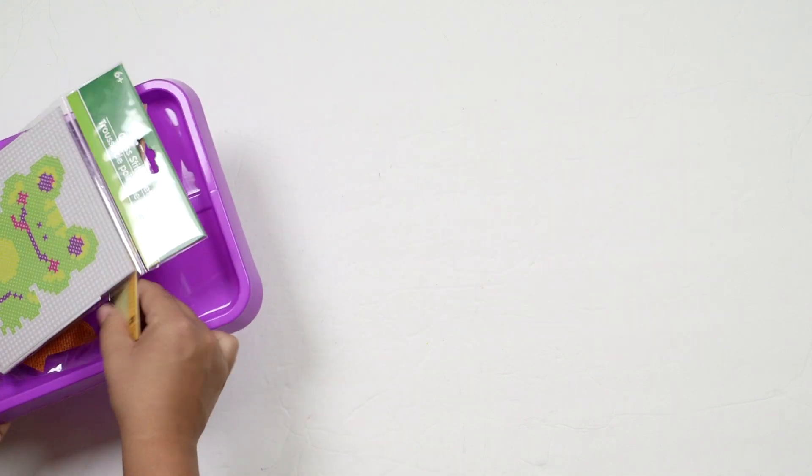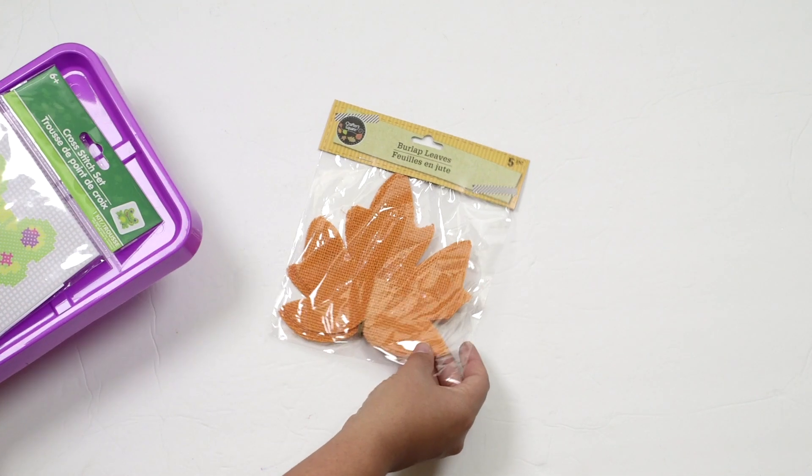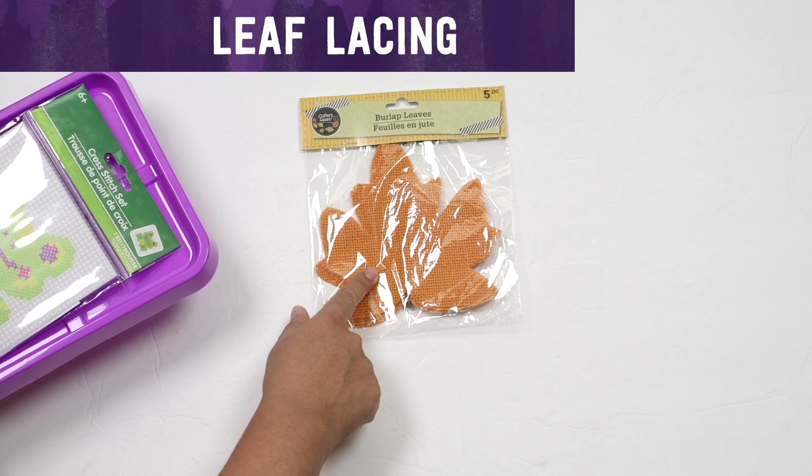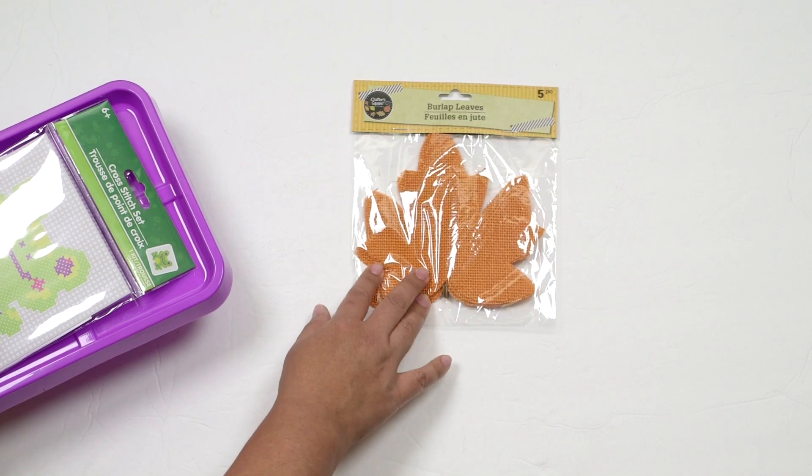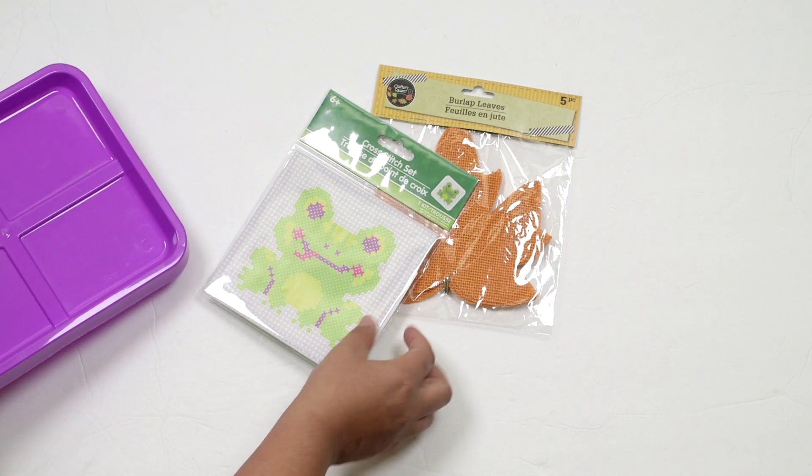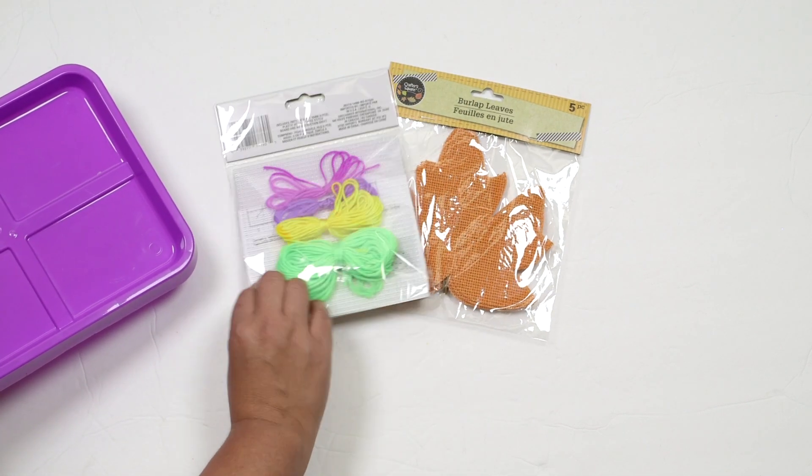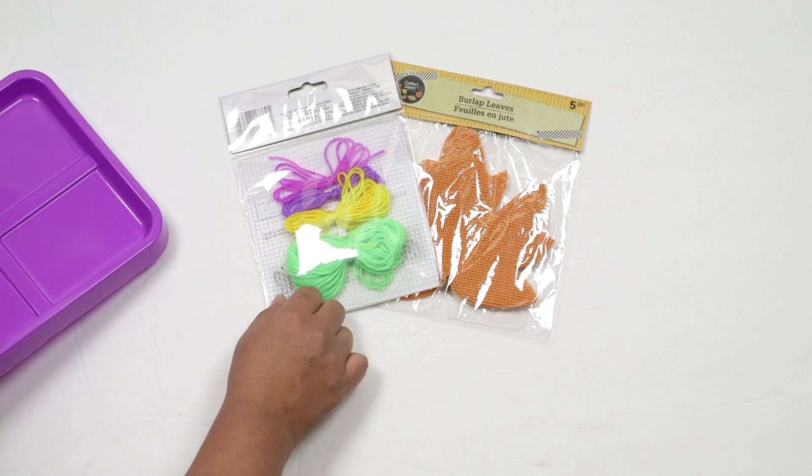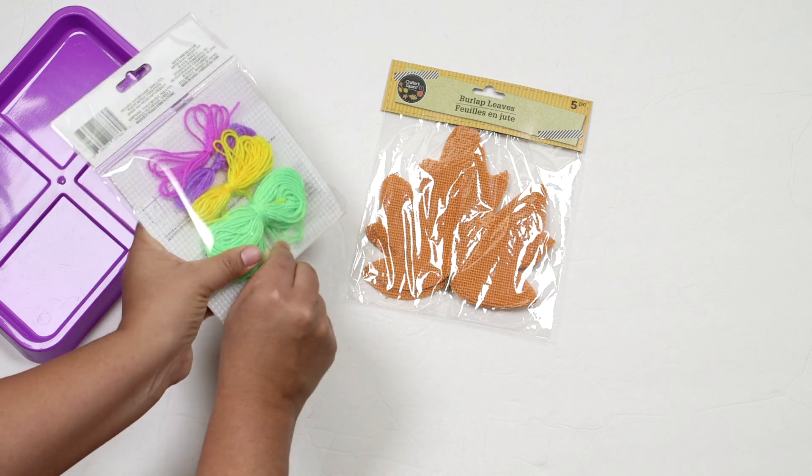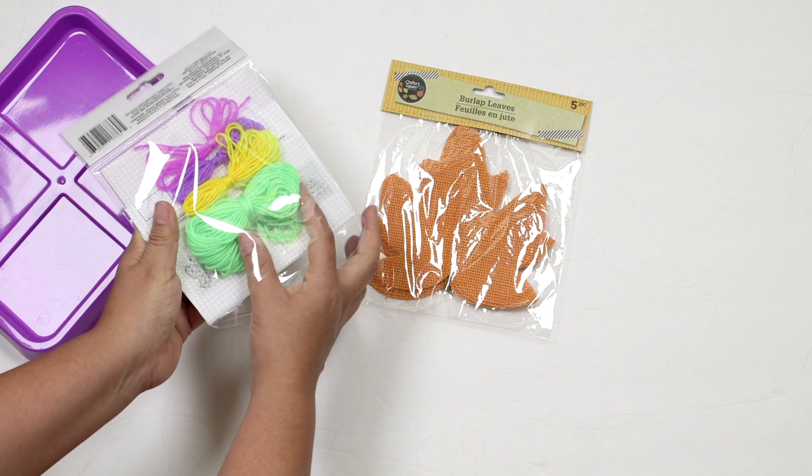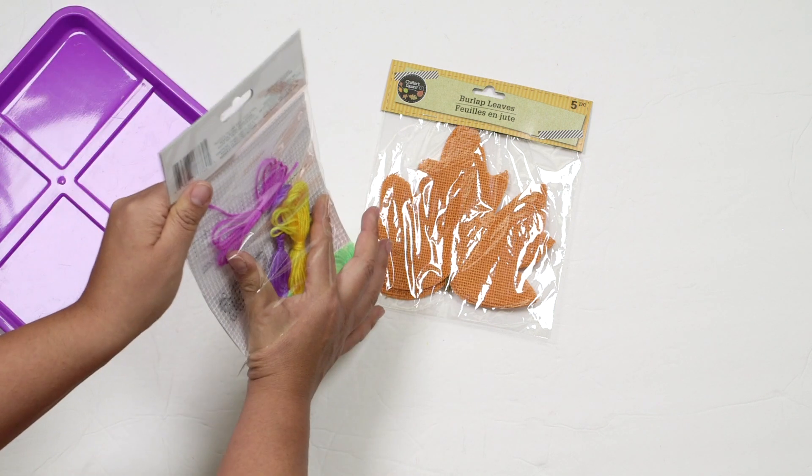Next up, I have an activity that was inspired by my recent Dollar Tree shop with me. So they have these burlap leaves. This one's orange. There's several different colors and different styles of leaves. And then I also picked up this cross stitch set, but I'm only going to be using the needle and thread on here. The thing about these cross stitch sets is that the needles on here are plastic, which is the reason why I got this particular one.